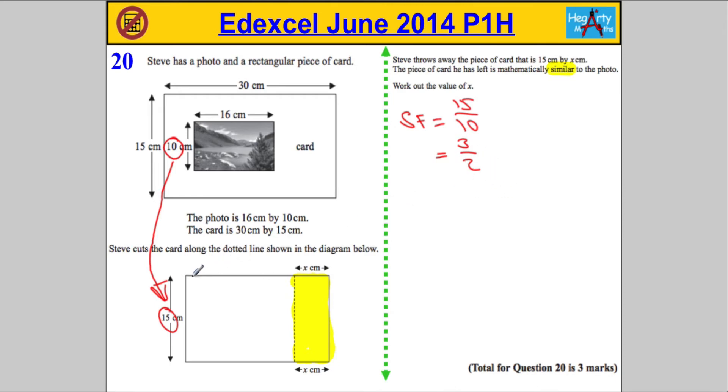Now the other thing that I need to work out is actually what is the length of the remaining piece of card. So if we've taken away that X and it was originally 30, that means this must be 30 minus X.